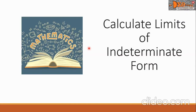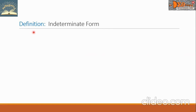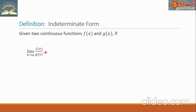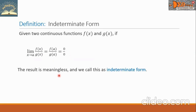Hi, everyone. Today we're going to study how to calculate limits of indeterminate form. Let us define indeterminate form: given two continuous functions f of x and g of x, if the limit of f of x over g of x as x approaches a is evaluated as f of a over g of a, and if this fraction results in 0 over 0, the result is meaningless, and we call this an indeterminate form.